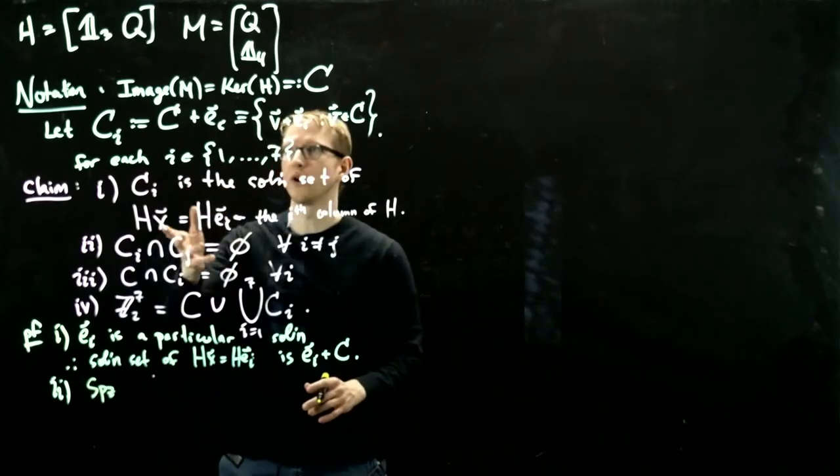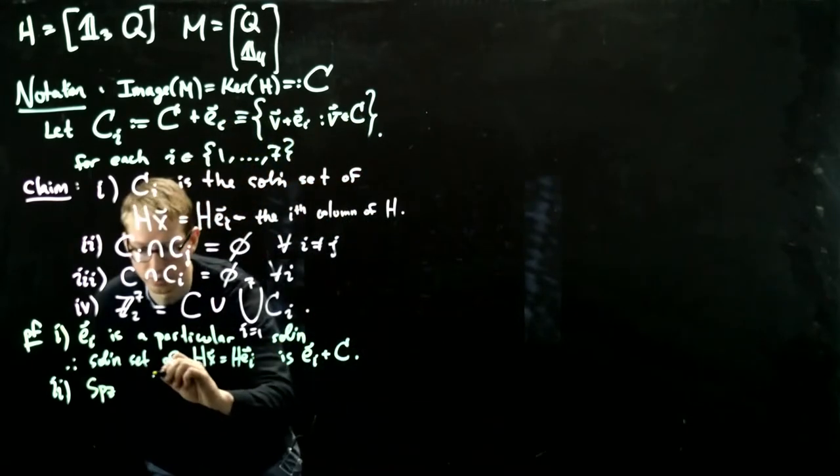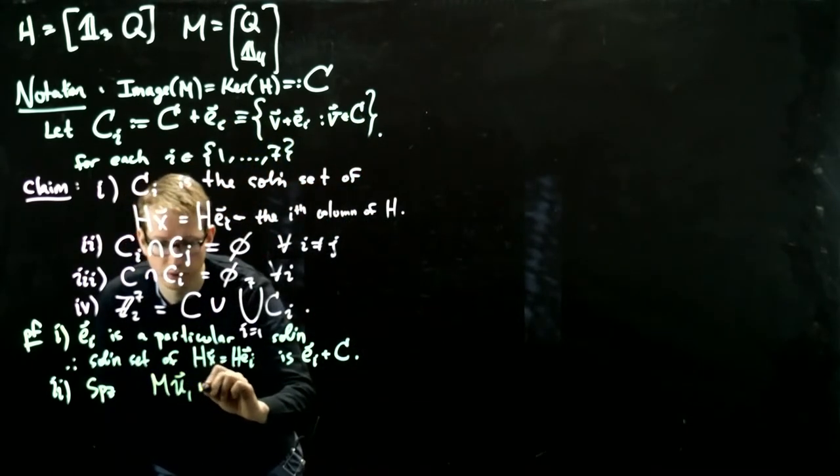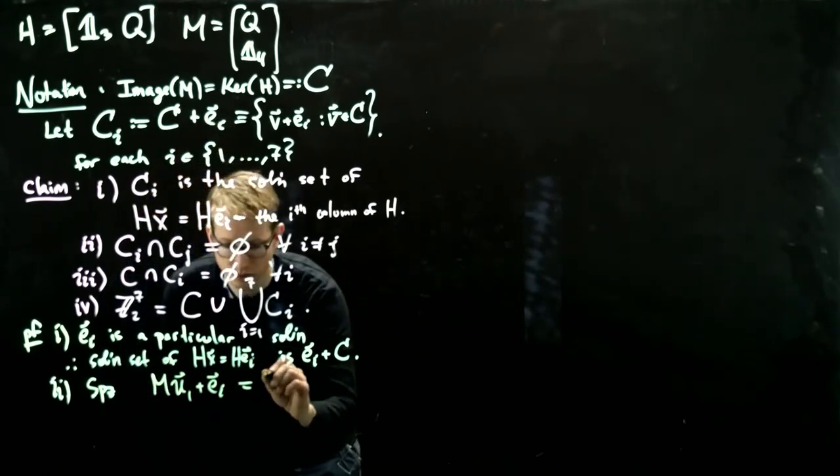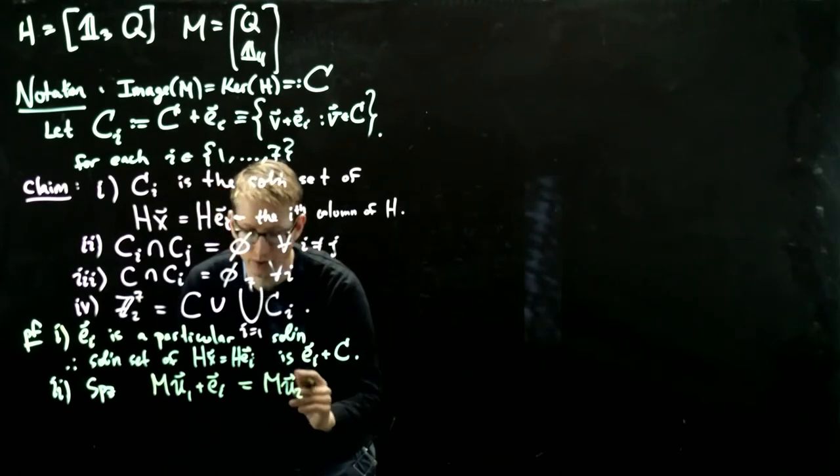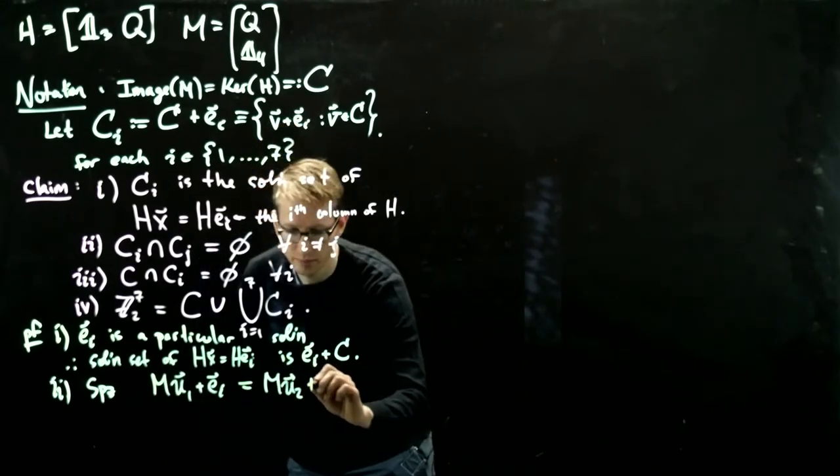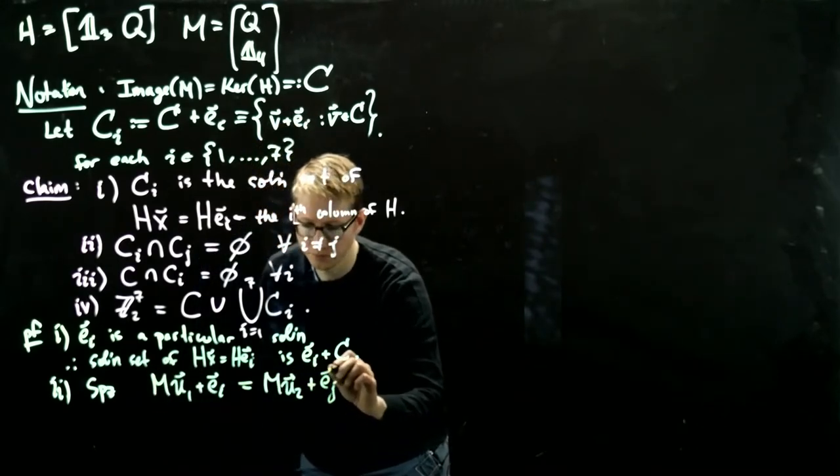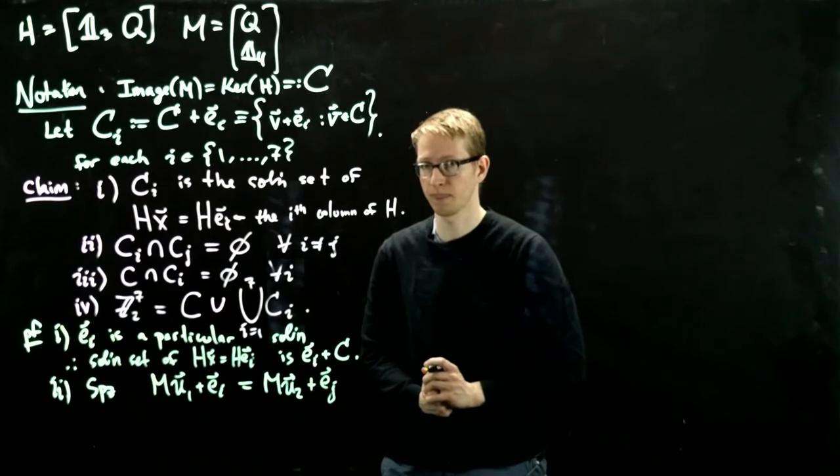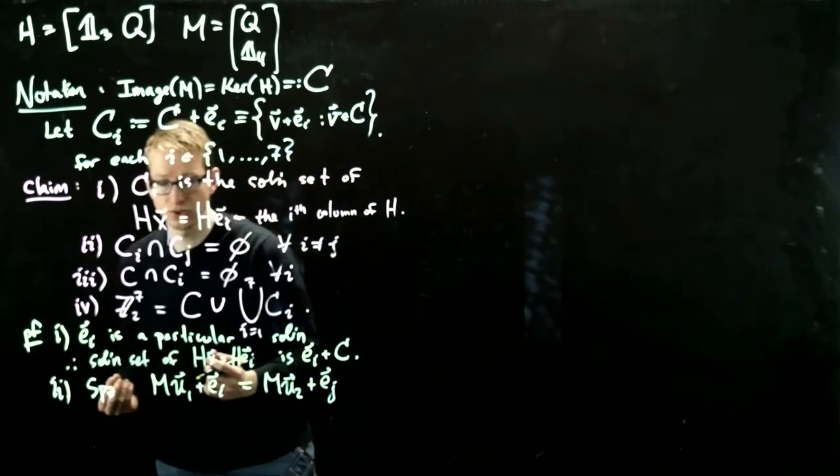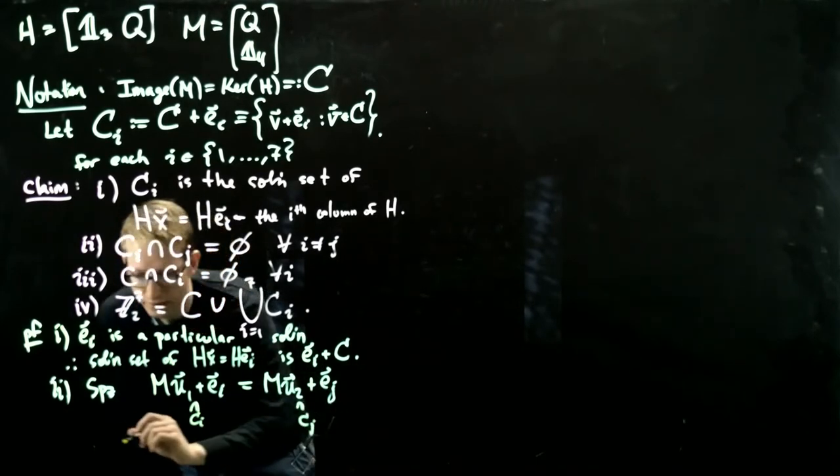Now, because we're a solution set of the homogeneous system, the kernel of H, and the kernel of H equals the image of M, our vectors are going to have this form. So suppose MU_1 plus E_i, so this is our vector in C_i, equals MU_2, because these two could have different, they have come from different vectors, plus E_j. So suppose we have these two vectors, and this one is in C_i, this one is in C_j. Now if we apply H to these vectors, so let me just write that, this is in C_i, this is in C_j, so we're totally clear.